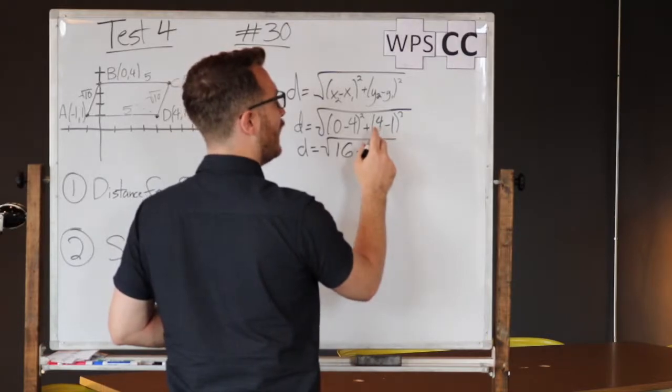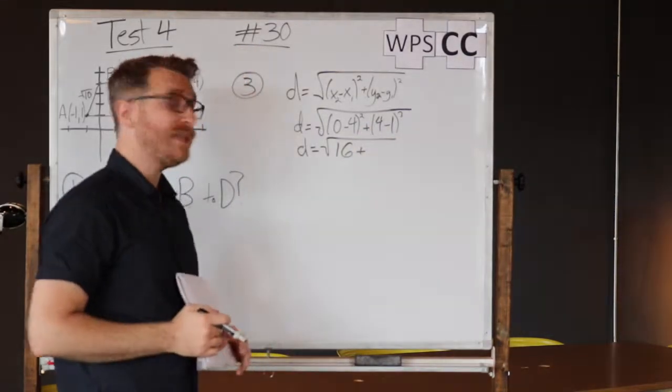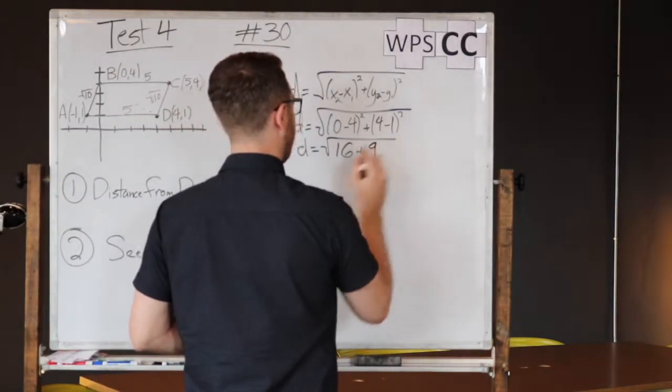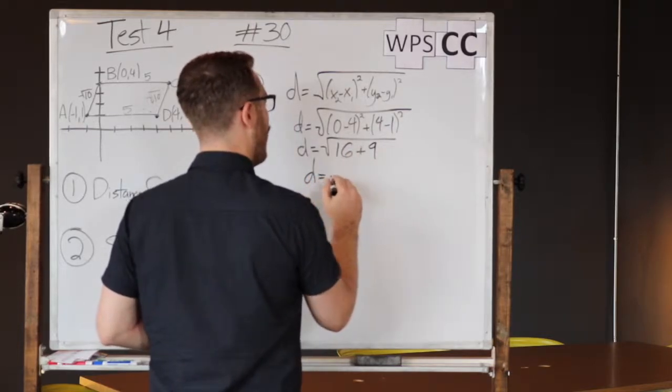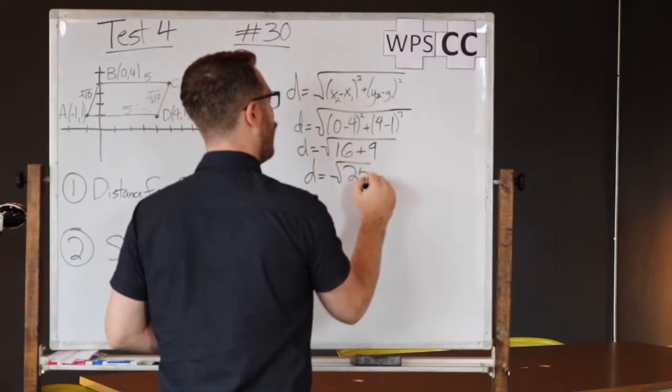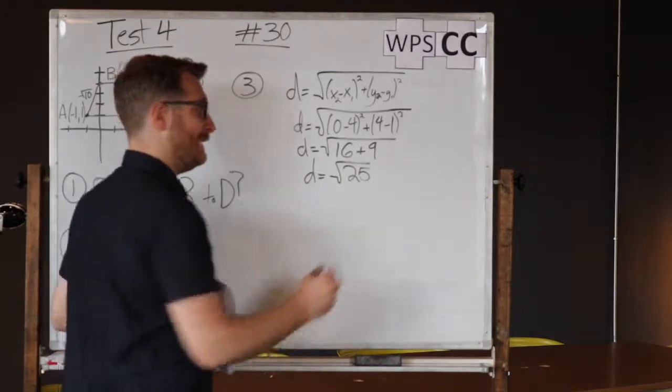Plus, we have four minus one, that equals three squared, nine. So we now have root of 25 is the distance.